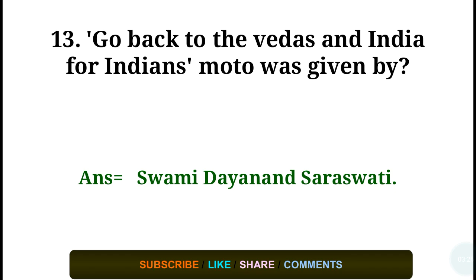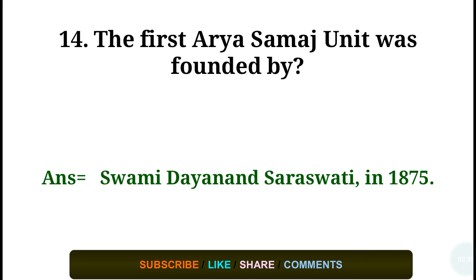Question number thirteen: 'Go back to the Vedas' and 'India from Indians' model was given by? Answer: Swami Dayanand Saraswati. Question number fourteen: The first Arya Samaj unit was founded by Swami Dayanand Saraswati in the year 1875.